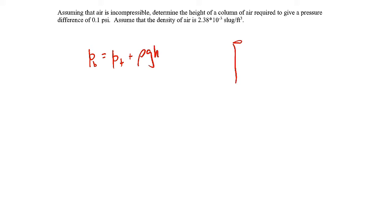It's essentially looking like this. We have this column of air for some height. This is the pressure at the top, here's the pressure at the bottom. We want to know when the pressure difference, Pb minus Pt, is equal to 0.1 psi.